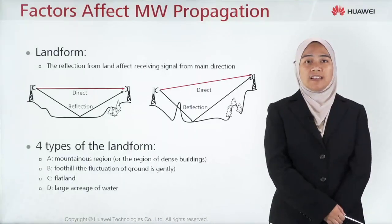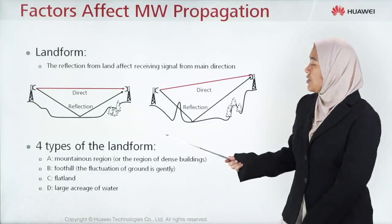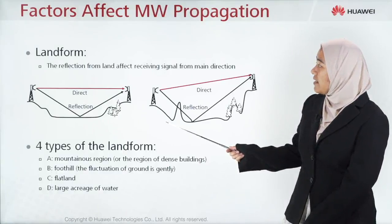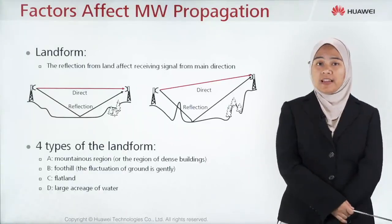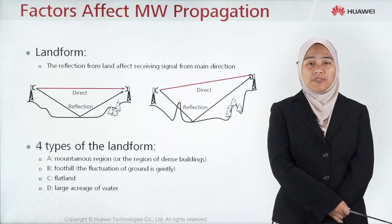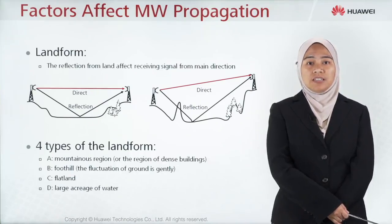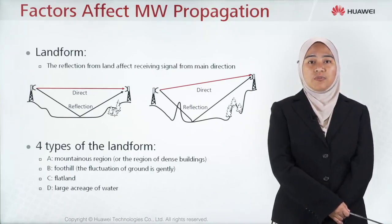The first factor is landform. As shown here, the reflection from land affects the receiving signal from the main direction. The four types of landform are: mountainous region, foothill, flatland, and large acreage of water.